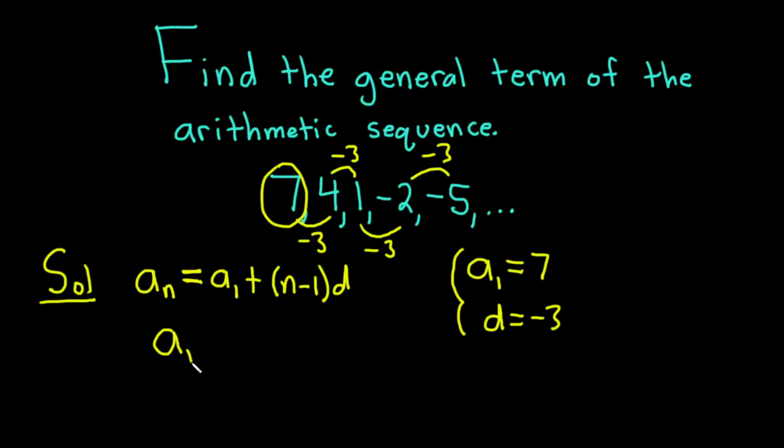So the general term, or the nth term, is equal to the first term, which is 7, plus n minus 1 common differences, or n minus 1 times d. So n minus 1 times negative 3.